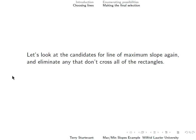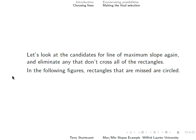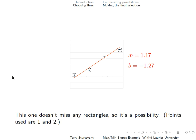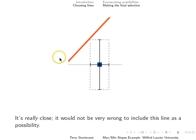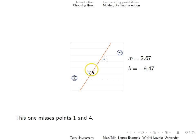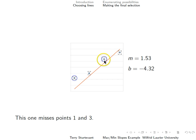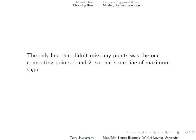Looking at the candidates for maximum slope, we eliminate the ones that don't cross all of the rectangles — the missed rectangles are circled. The line connecting points 1 and 2 doesn't miss any rectangles, so it's possible, and the slope and y-intercept are given. Connecting points 1 and 3, both points 2 and 4 are missed. Connecting points 1 and 4, point 2 is missed — it just barely misses, so it wouldn't be very wrong to include this line, but it is excluded. Between points 2 and 3, points 1 and 4 are clearly missed. Between points 2 and 4, point 1 is clearly missed, and point 3 is also missed by a tiny amount. So the only line that didn't miss any points was the one connecting points 1 and 2 — that is our line of maximum slope.